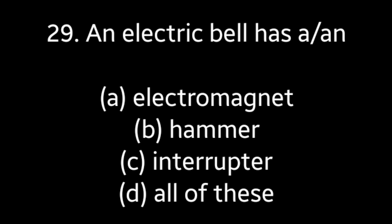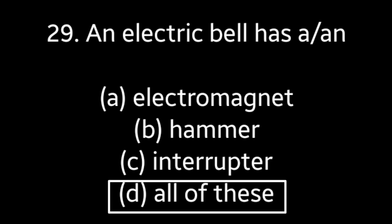Question No. 29: An electric bell has — Electromagnet, Hammer, Interrupter, All of these. Answer is Option D: All of these.